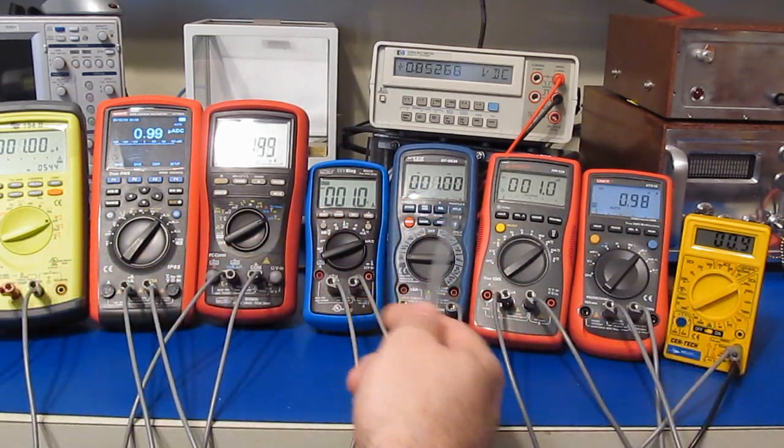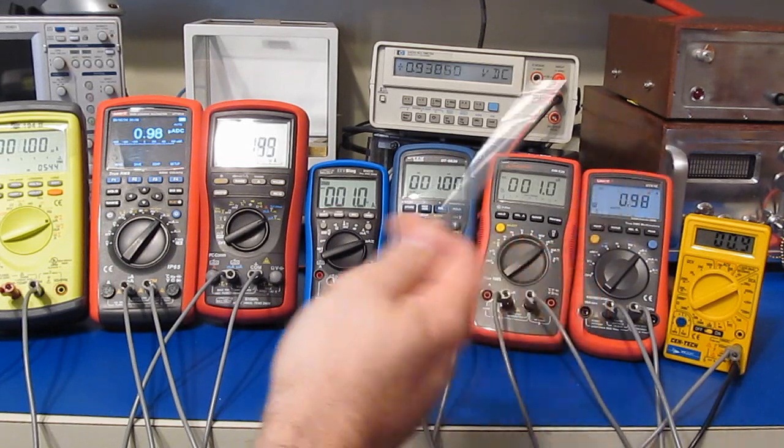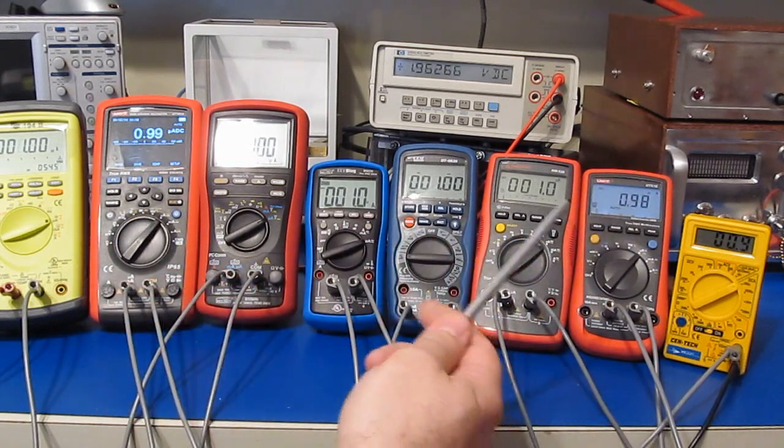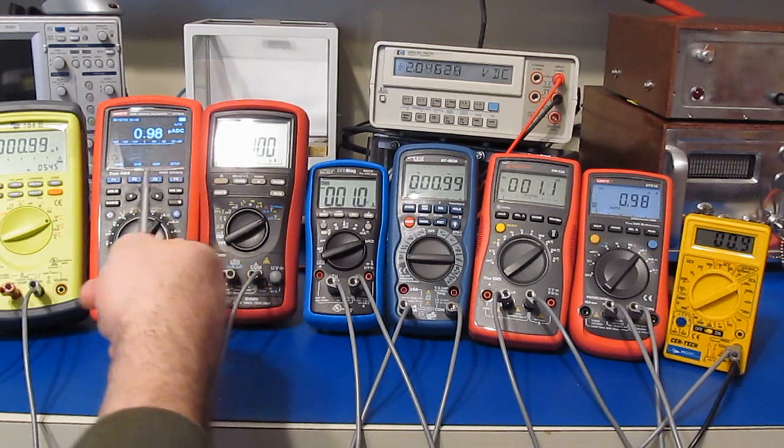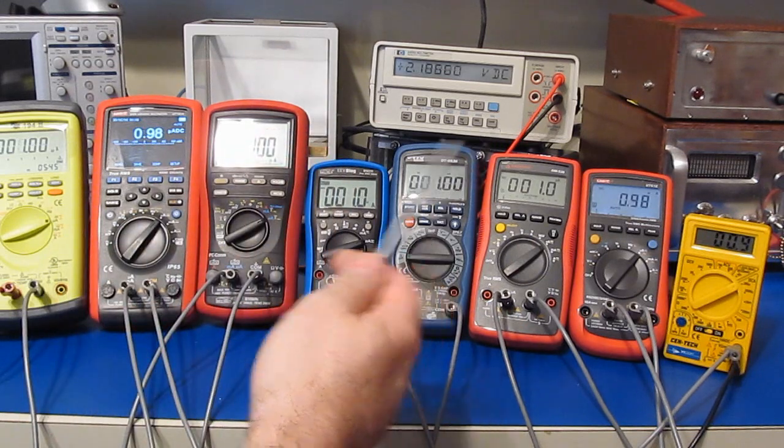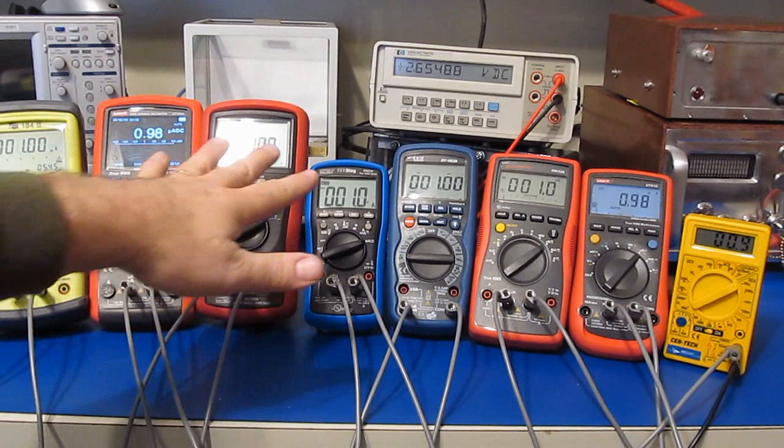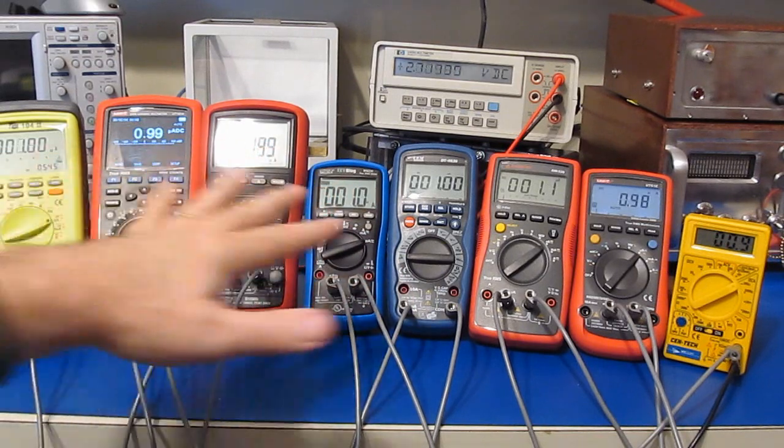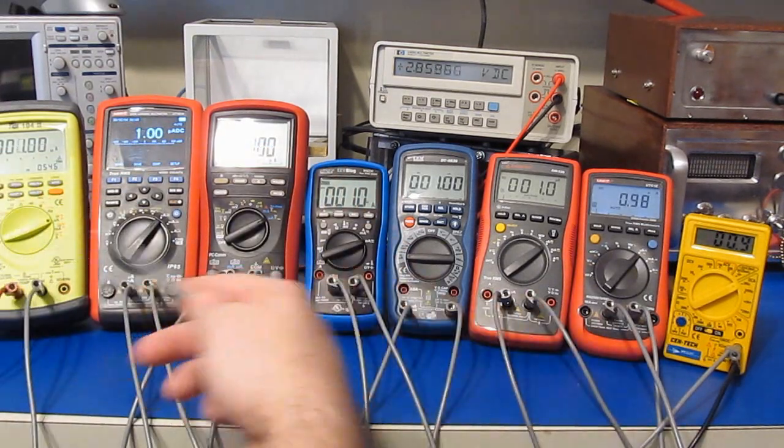I have them all set up in series. They're currently attached to my Fluke reference. What I've done is I placed a series resistor in line with them and I've adjusted that value to give me roughly one microamp of current.